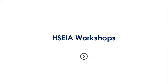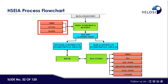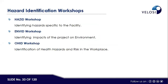Proceeding to the next detail — the HSE workshops. As mentioned in the previous slide, the HSE workshop is a PHA workshop, starting from OHID, ENVID, and HAZID. The HAZID workshop identifies the hazards specific to the facility. The ENVID workshop identifies the impacts of the project on the environment. The OHID workshop identifies the health hazards and risk in the workplace — what health hazards are associated with the project and how they impact workers' health.